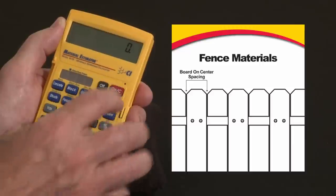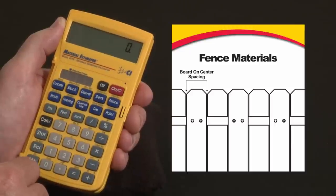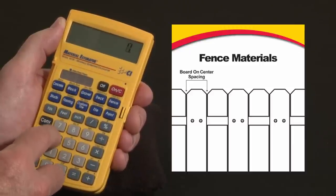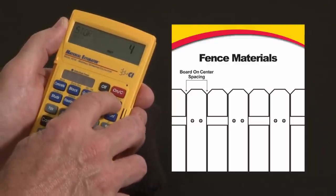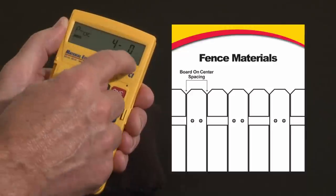If we want to change any of those settings it's very simple. Say we want to make a garden fence with four foot on center. Let's go four feet, store. Above the fence key it says post on center. So now it says post on center is four feet.